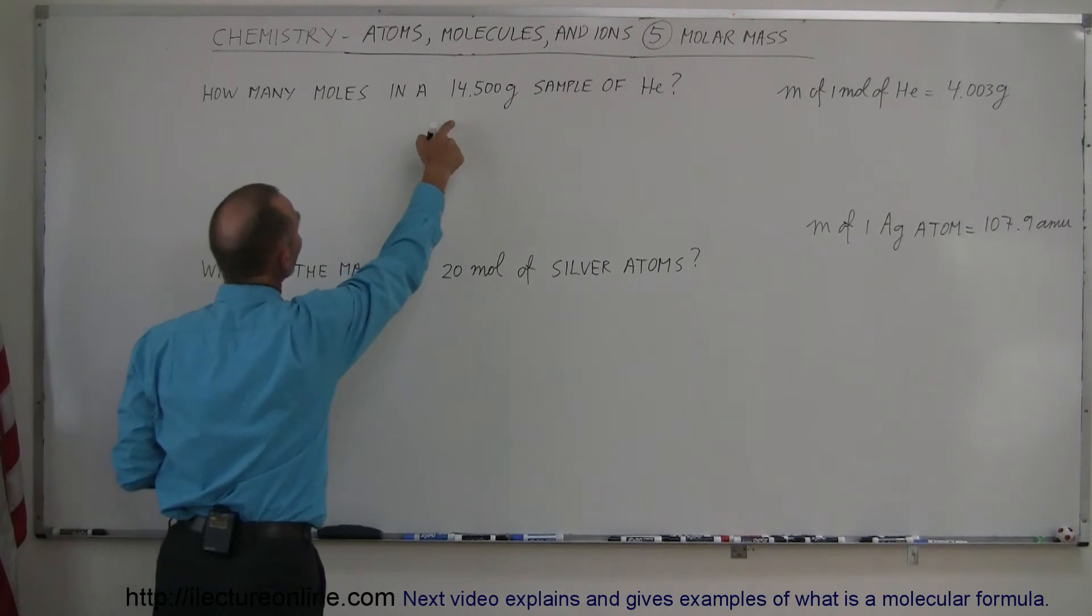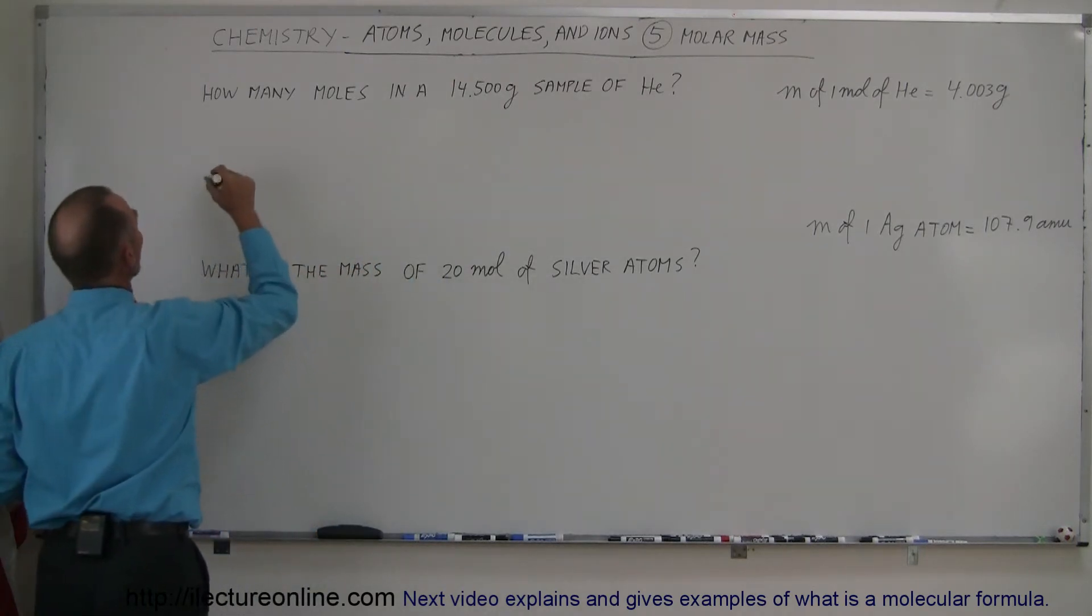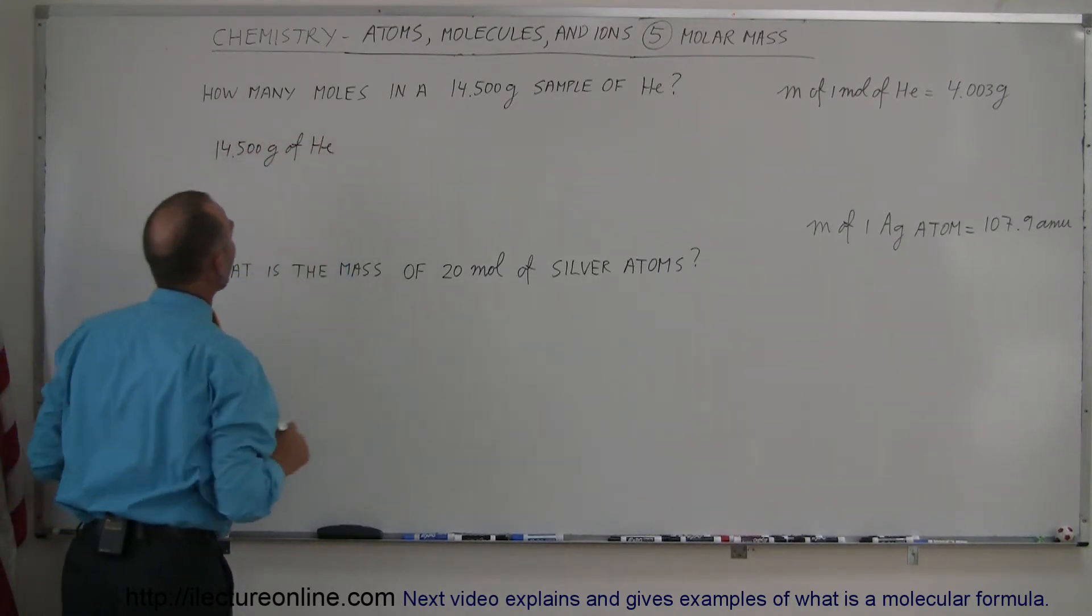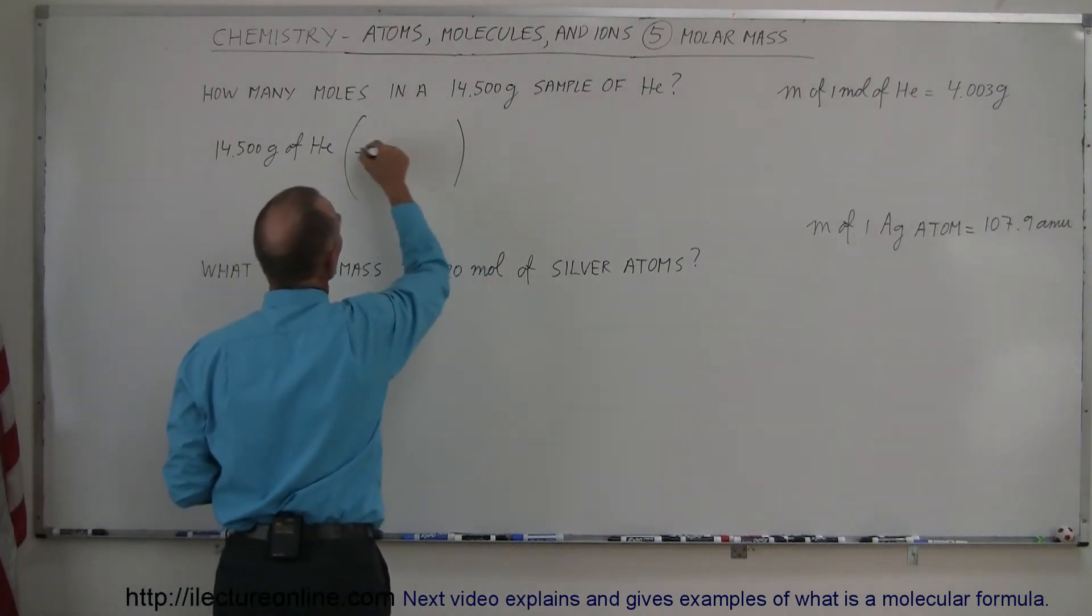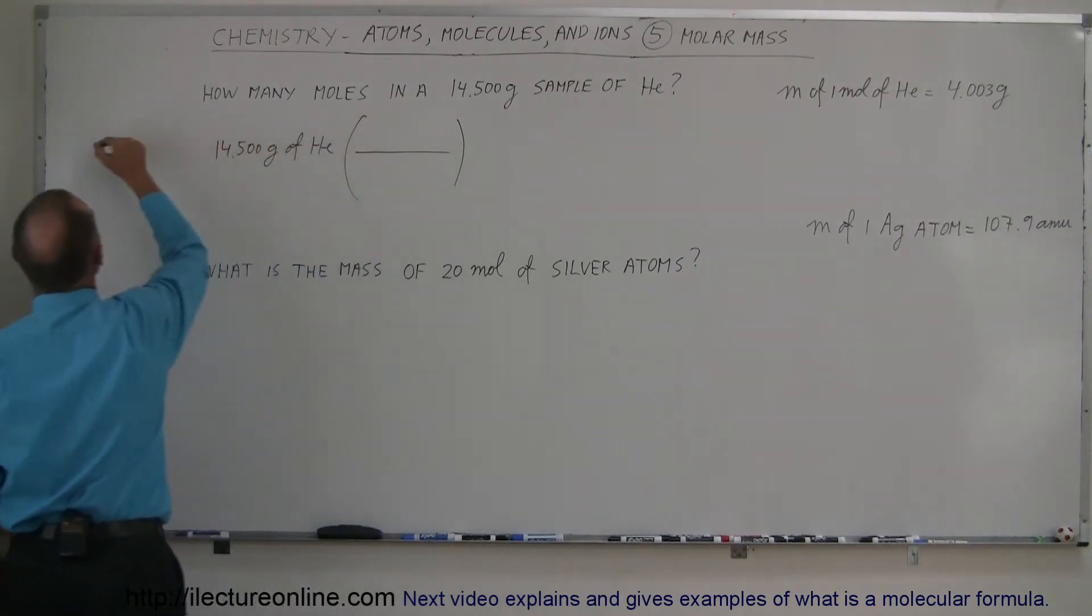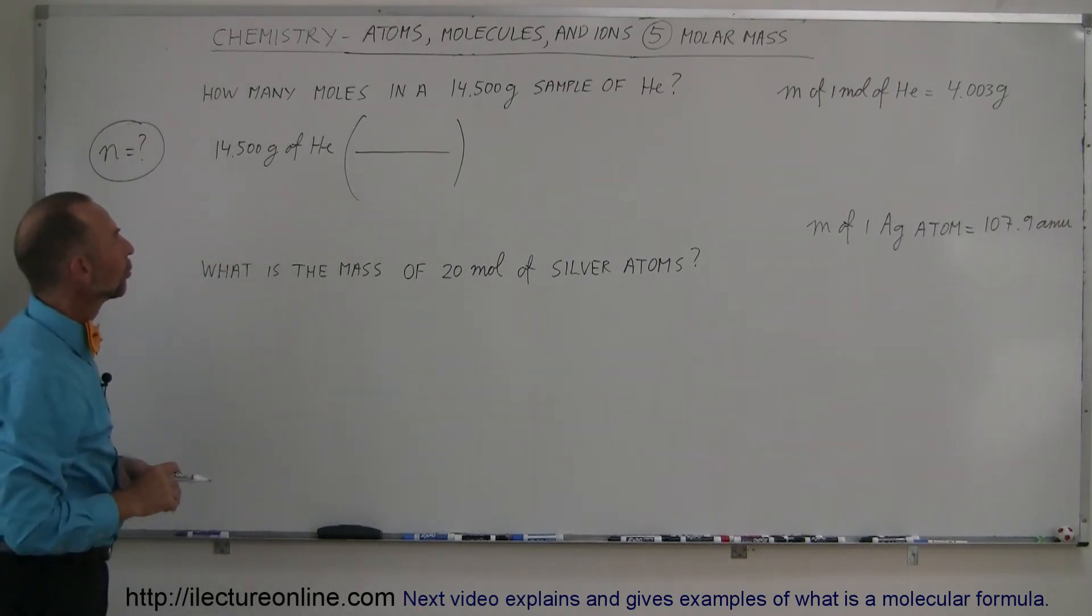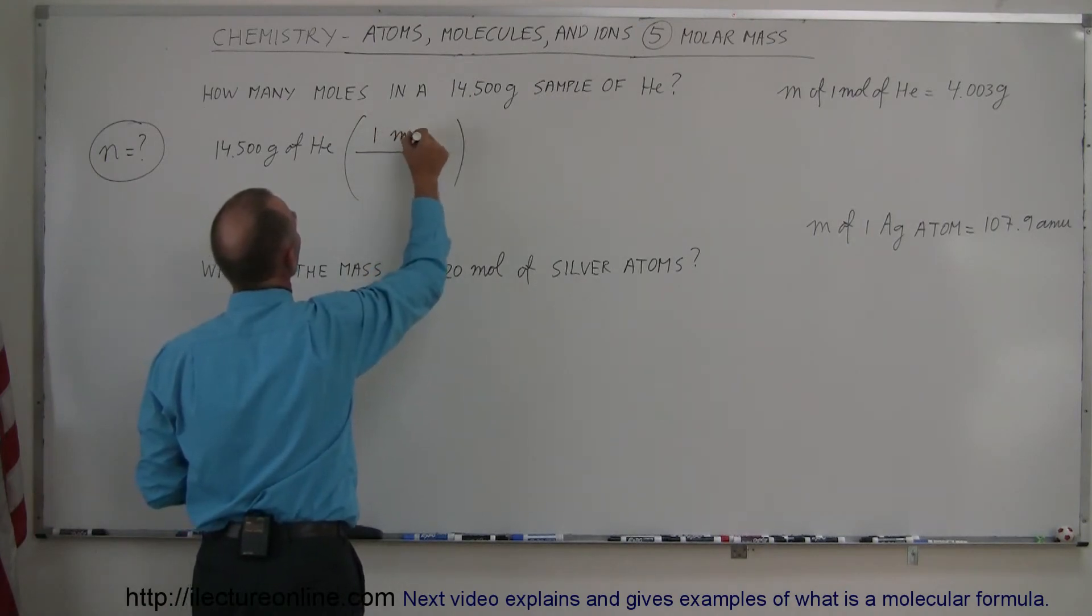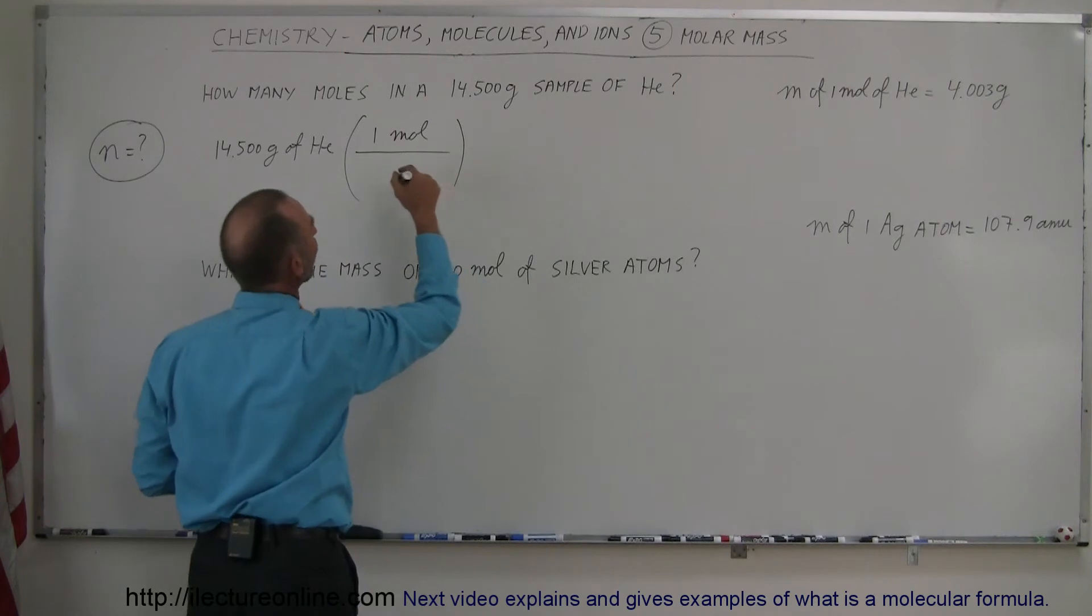Well, we know we have a sample of 14.5 grams of helium. So if we take 14.5 grams of helium and we multiply that times a ratio, what we want is the number of moles. So n equals question mark because a small n is used to represent the number of moles. So what we're going to do is we say, well, one mole has a mass of 4.003 grams of helium.